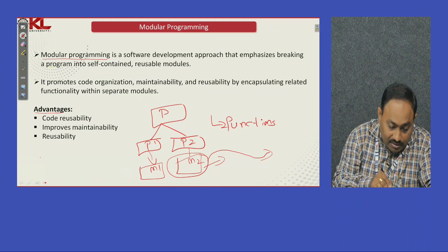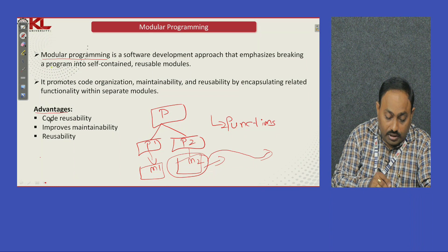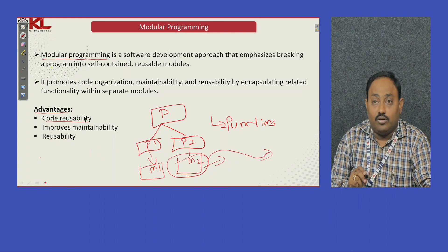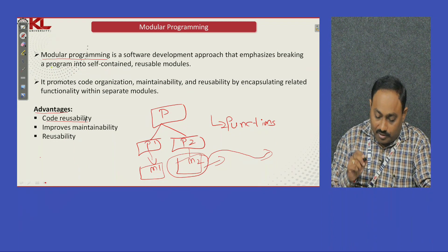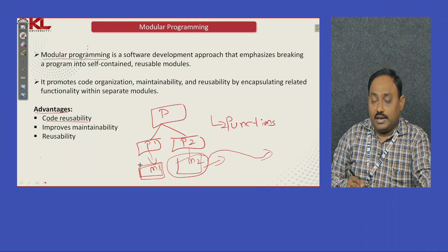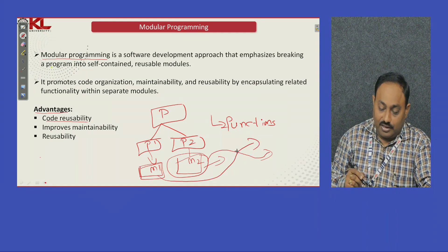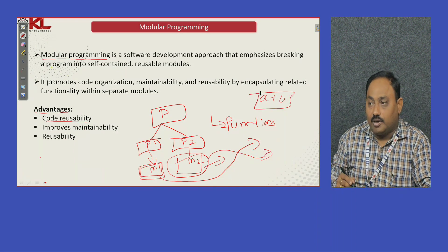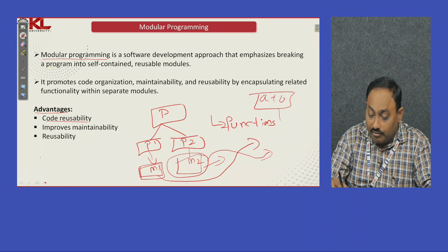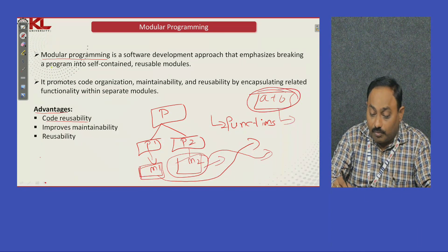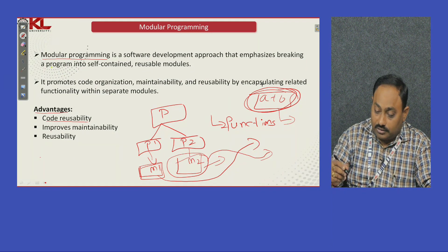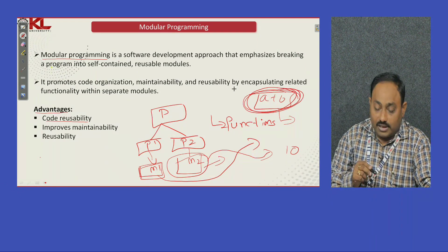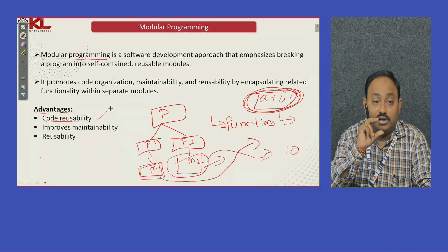Let us see the advantages of modular programming. The first advantage is code reusability. Code reusability means writing code once and using it many times. For example, if we define a module M1 to find the sum of two numbers A plus B, whenever we want to find the sum of two numbers, we can call that module. If we want to find the sum of 10 pairs of numbers, we can use the same module 10 times. That is known as code reusability — define once and use many times.